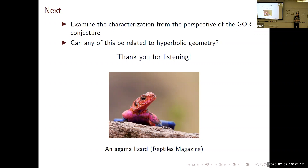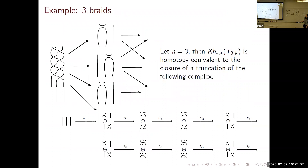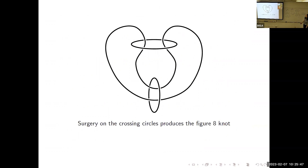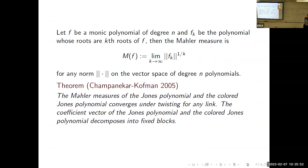What was the Mahler measure statement again? That it converges to some number under twisting. There are some results about the Mahler measure of pretzel knots, like the minus-two-three-q family. We can talk after.